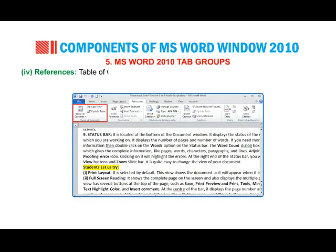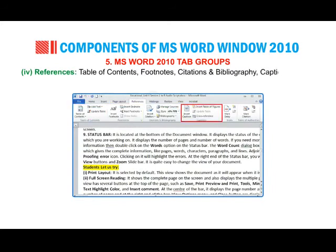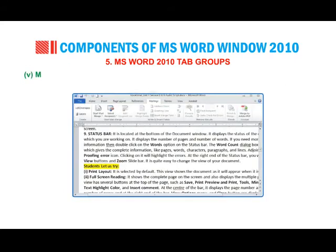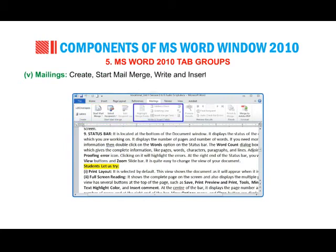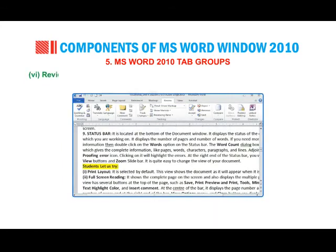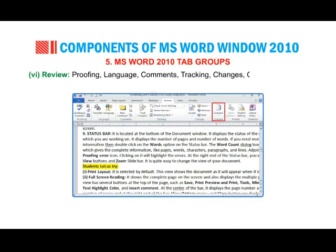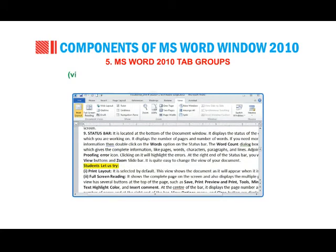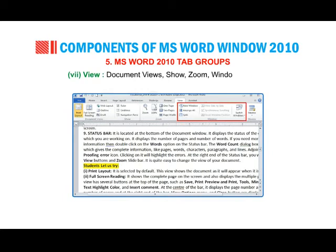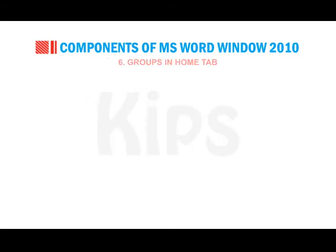References: Table of Contents, Footnotes, Citations and Bibliography, Captions, Index, Table of Authorities. Mailings: Create, Start Mail Merge, Write and Insert Fields, Preview Results, Finish. Review: Proofing, Language, Comments, Tracking Changes, Compare, Protect. View: Document Views, Show, Zoom, Window, Macros.